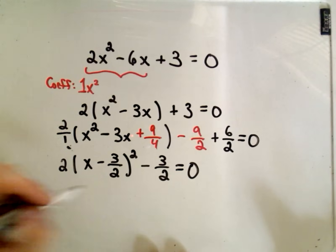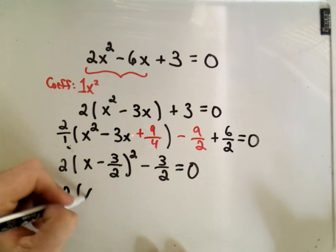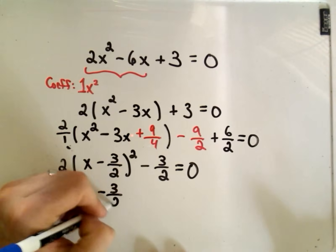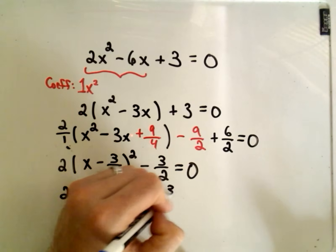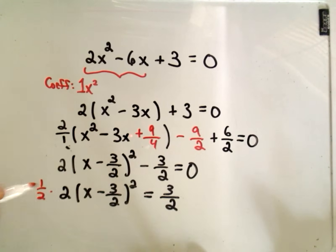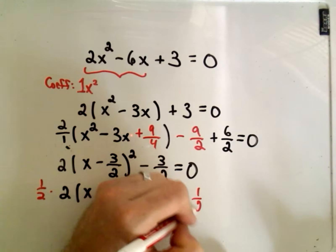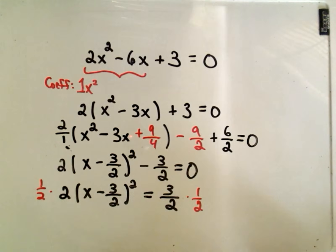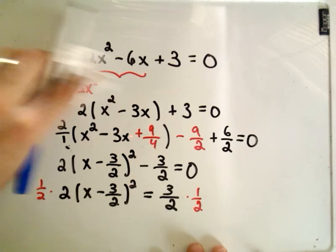And then just like the last problem in the other video, we'll isolate the stuff on the left side. We'll add 3 halves to both sides. We'll divide both sides by 2, or equivalently, we can multiply both sides by 1 half. And let me get myself some more space here.